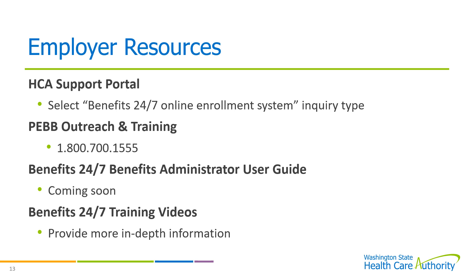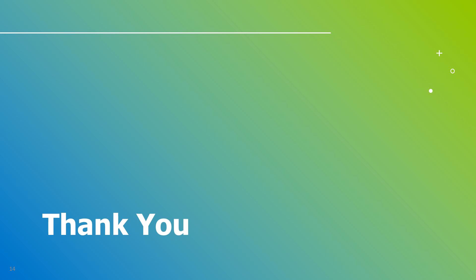Now that you know how to add a new subscriber to Benefits 24/7, here are some follow-up resources. You can send questions through the HCA support portal — when you create your ticket, select 'Benefits 24/7 online enrollment system' as your inquiry type. You can also reach out to the outreach and training team at the 800 number listed. A Benefits 24/7 Benefits Administrator user guide link is coming soon, and we'll be continuing to create and post additional detailed training videos, all located on the PEB Benefits Administrator website. That wraps up our video training on how to add a new subscriber in Benefits 24/7. Thank you for watching.